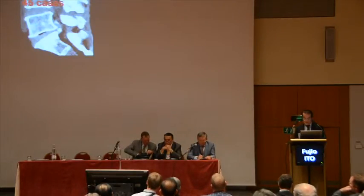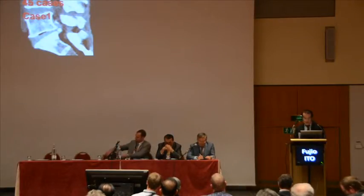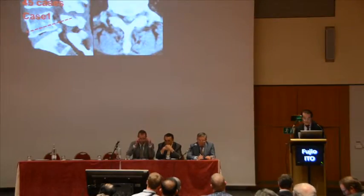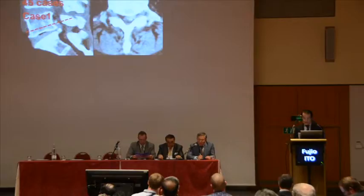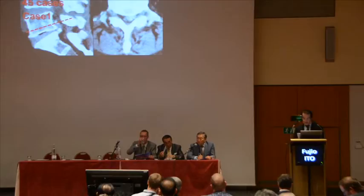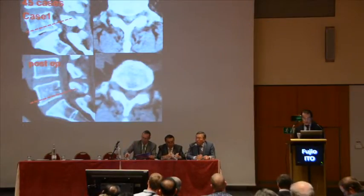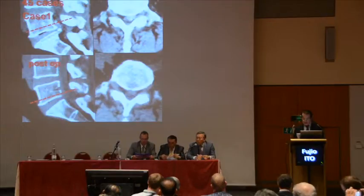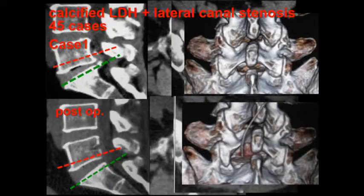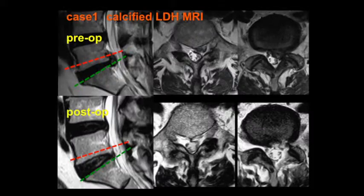We performed 45 cases of PEL on calcified LDH with lateral canal stenosis. In Case 1, the red dotted line on the pre-op sagittal CT plane shows the position of the actual image with calcified nucleus. The posterior image shows the same level minus the calcified LDH. The green dotted line shows the same result at a different level. In the 3D image comparison, the decompression of the lateral recess stands out. These shots of Case 1 are also shown under MRI.